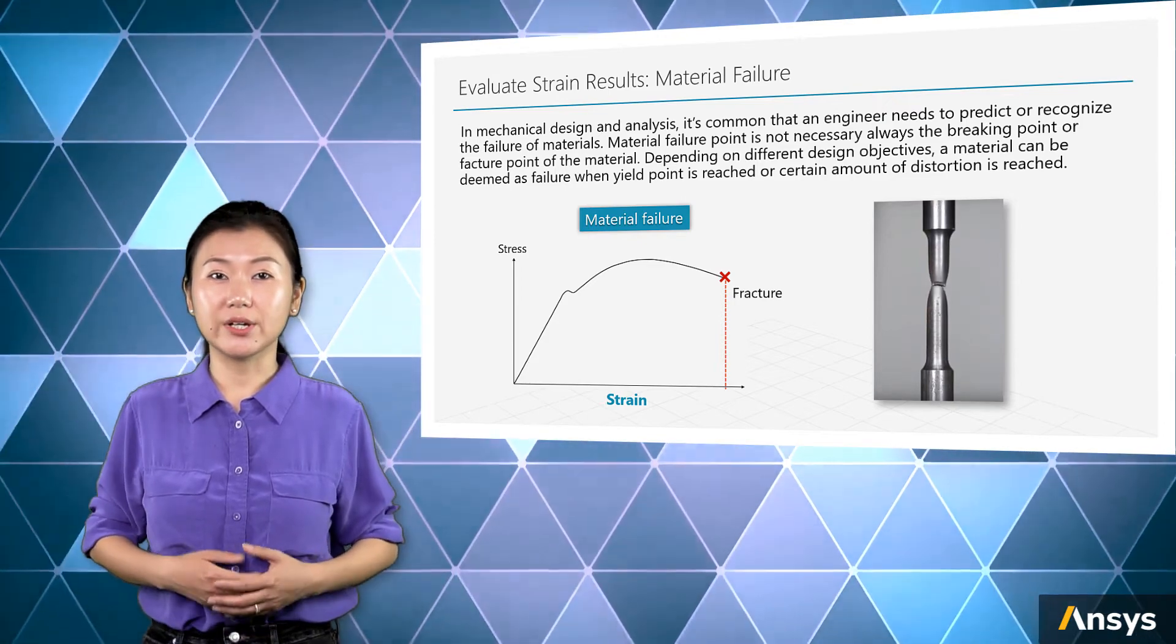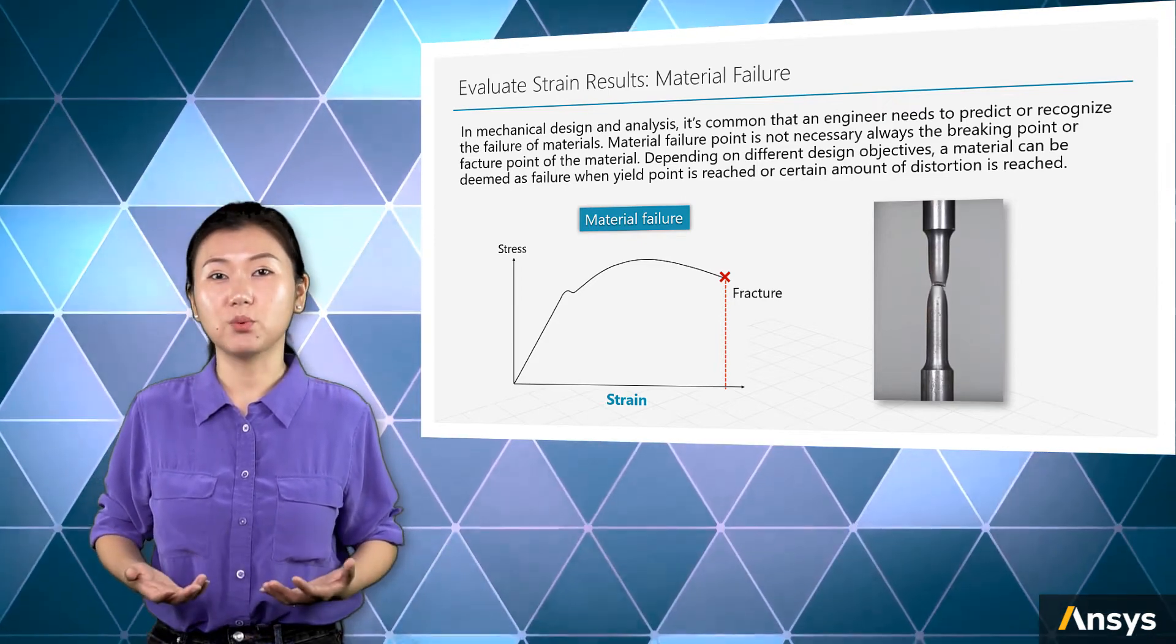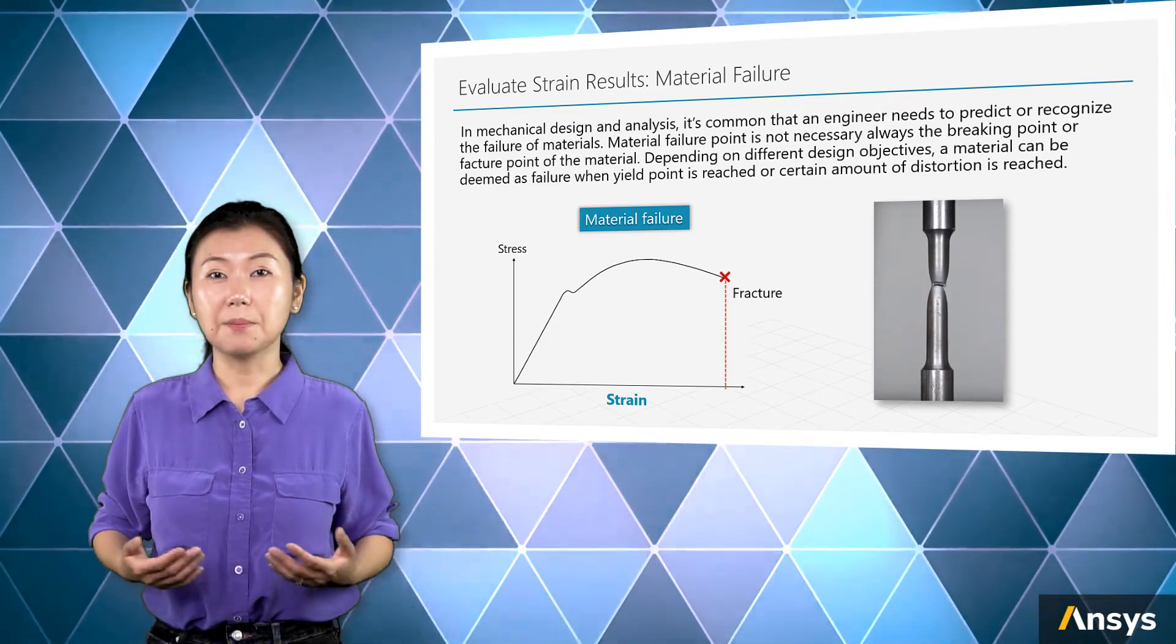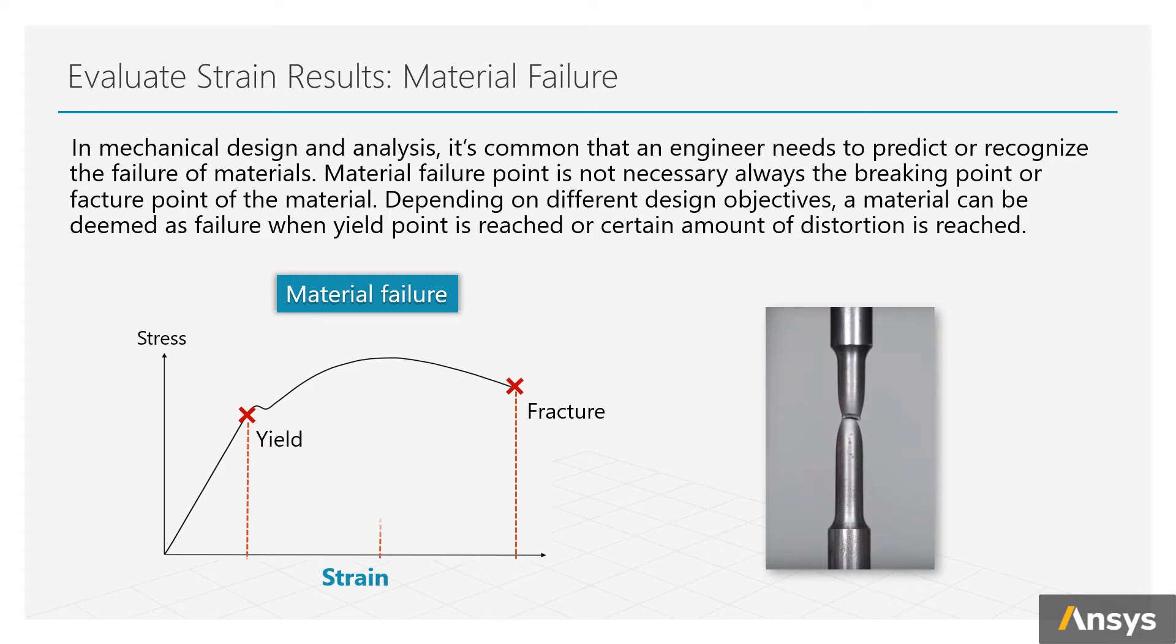Material failure is not necessarily always the breaking point or fracture point of the material. Depending on the design objectives, a material can be deemed as failure when yield point is reached or certain amount of distortion is reached.